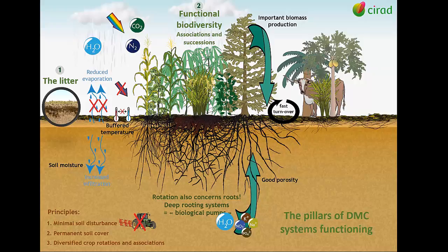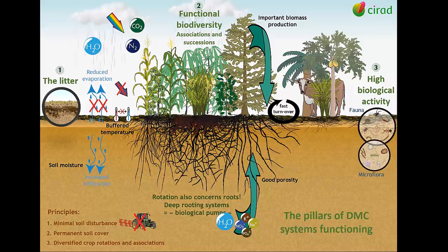The third pillar of DMC systems is the high biological activity of the soil fauna and microflora. The permanent supply of energetic substrate provided by living roots and decomposing material, alongside buffered temperature, good soil porosity and moisture, create ideal conditions for the soil fauna and microflora.